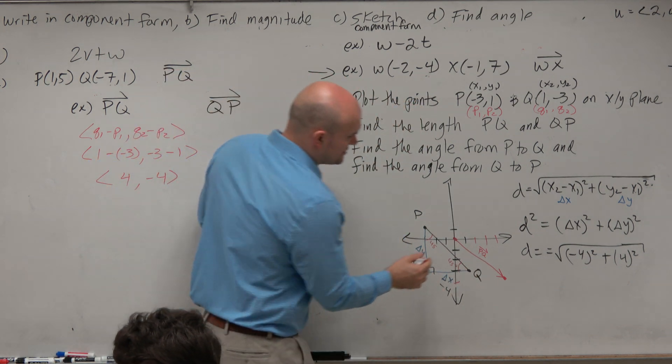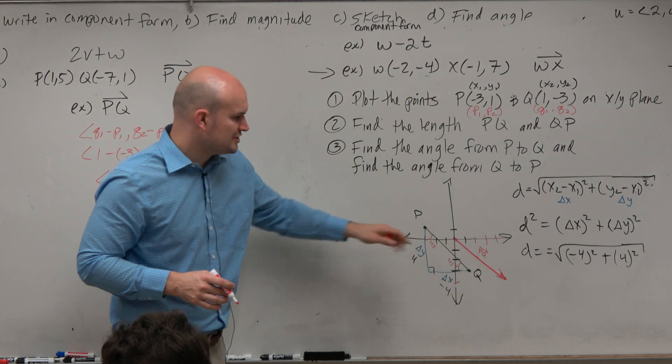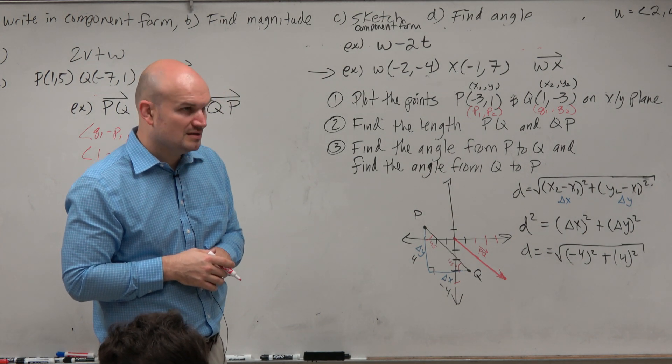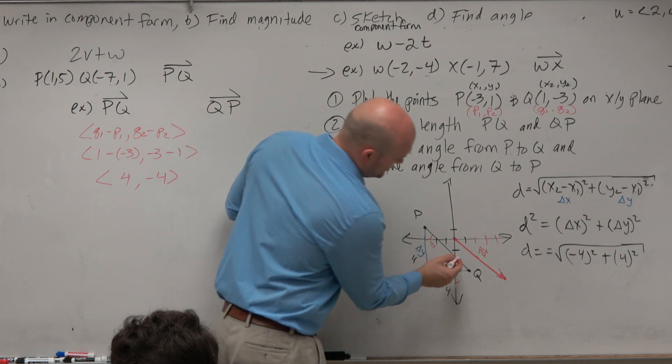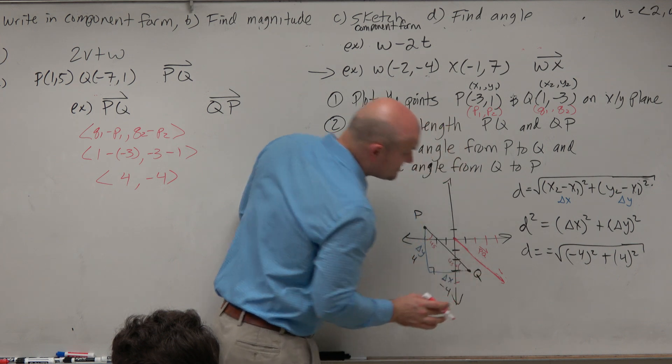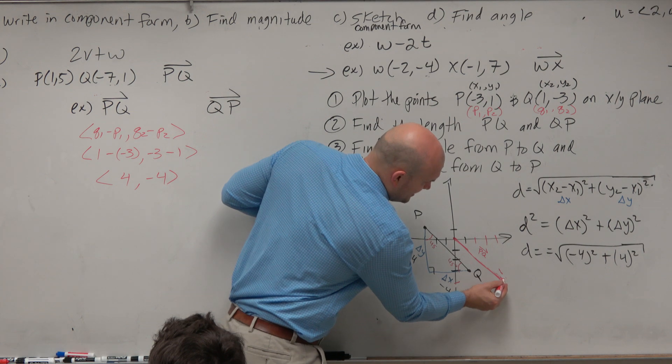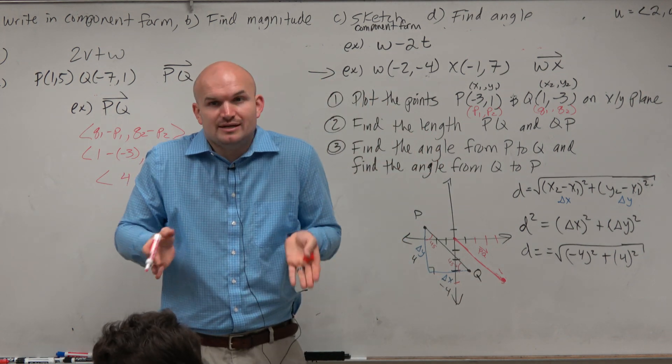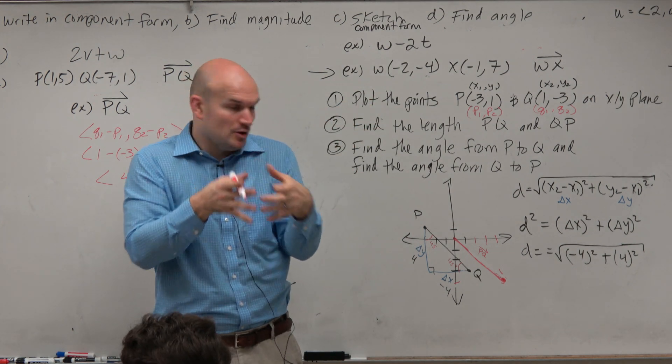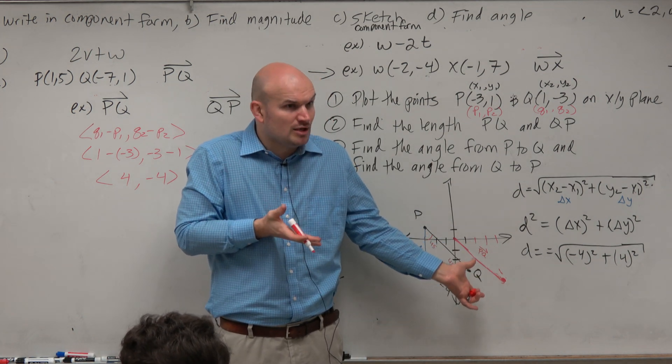What do you notice? What do you recognize about this vector compared to the original vector that you graphed? It's parallel, right? It's the same length. All I did was take that initial vector, your initial and terminal point, and by identifying the component form, I basically just shifted it so the initial point is at the origin. That's all I did. That's really all component form does.